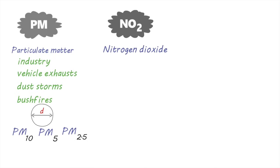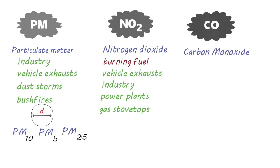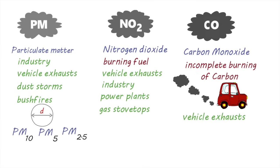Nitrogen dioxide is usually formed when fuel is burned at a high temperature. Common sources are the exhaust of motor vehicles, industry, power plants and gas stovetops. Carbon monoxide is colorless and odorless and is formed when the carbon in fuel doesn't burn completely. The main source of carbon monoxide is motor vehicle exhausts and therefore carbon monoxide levels are very high in areas with heavy traffic congestion. Other sources include industry, incinerators and bushfires.